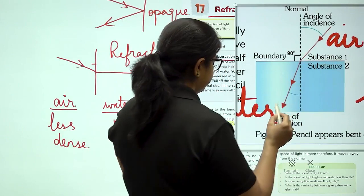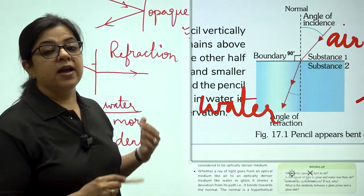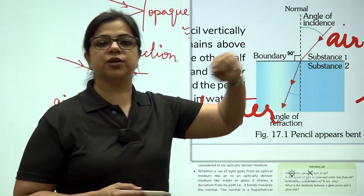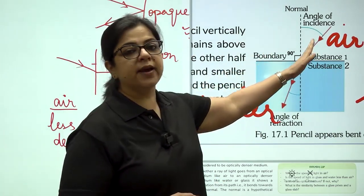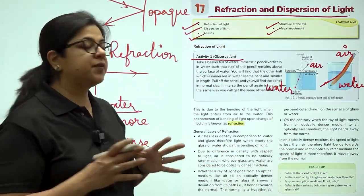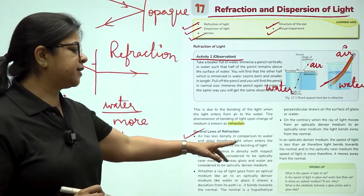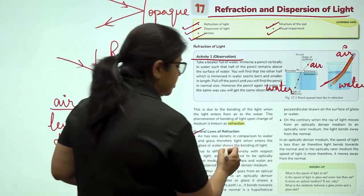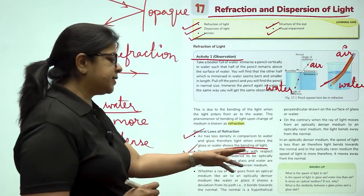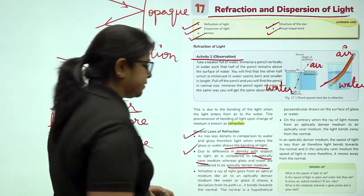When it is entering from air to water, it is bending towards the normal and the opposite is going to happen if the light was supposed to go out from water to air. When it goes out from water to air, it will move away from the normal. Air has less density in comparison to water and glass. Therefore, light when enters the glass, it shows bending. Due to the difference in density, air is considered to be optically rarer medium and water is optically denser medium.